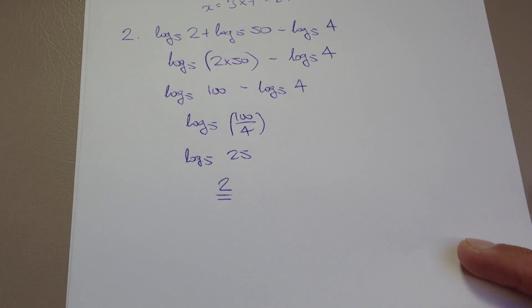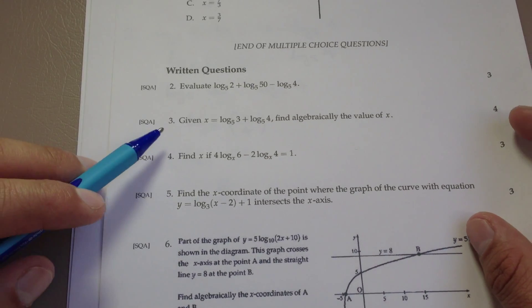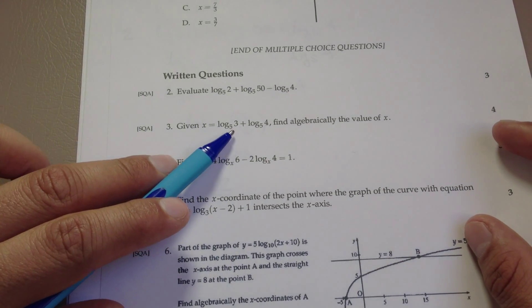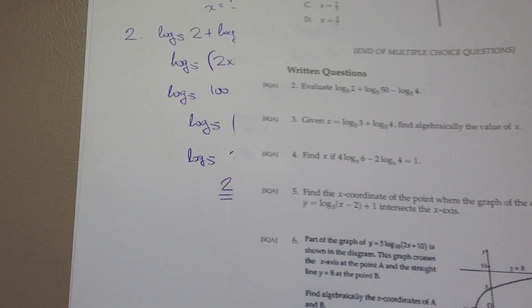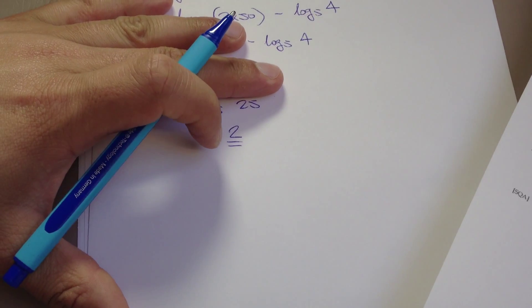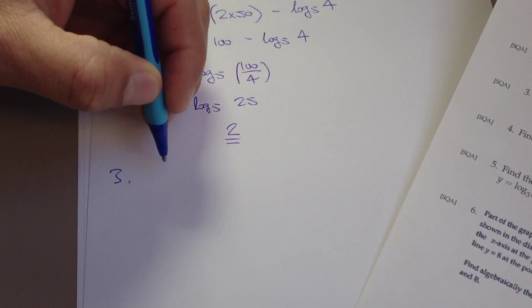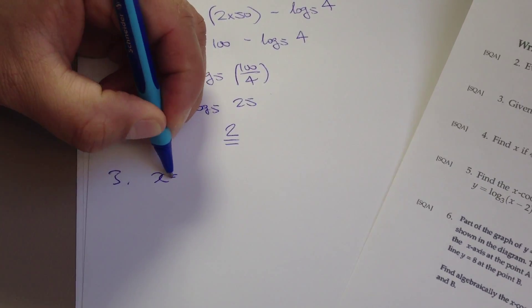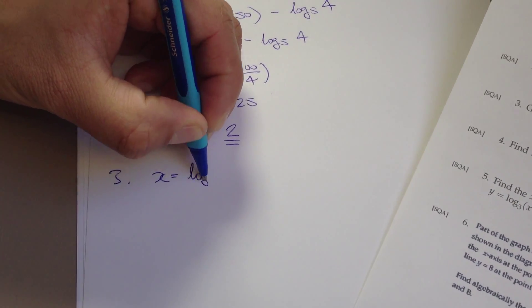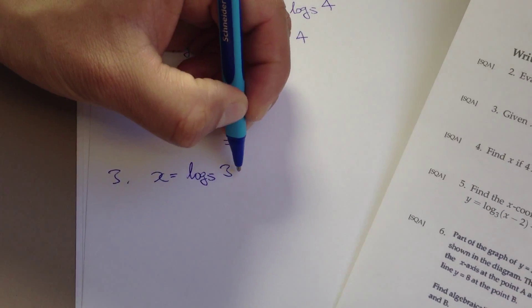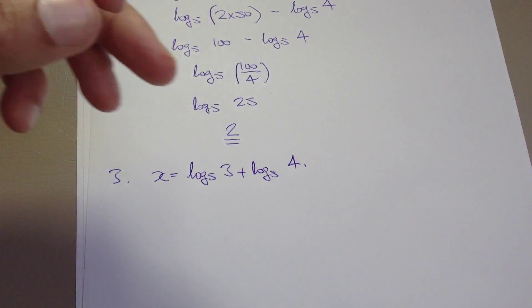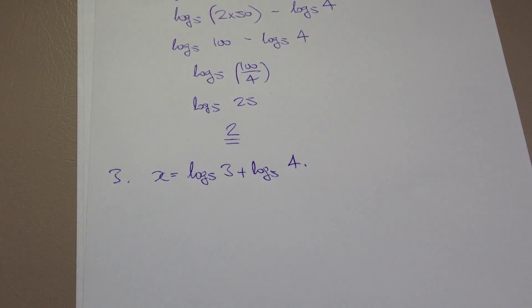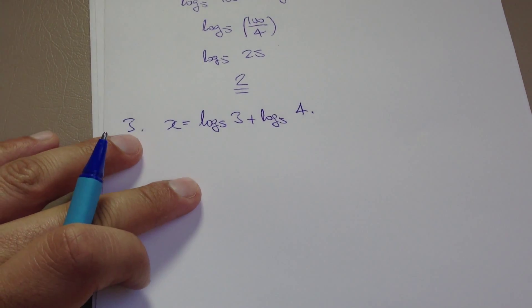Let's have a look at another one. Here we have, given x equals log to base 5 of 3 plus log to base 5 of 4, find algebraically the value of x. So let me again just copy that question down. So x, we've been told, is log to base 5 of 3 plus log to base 5 of 4. And we've been asked to figure out the value of x.